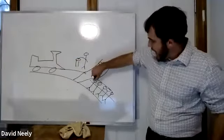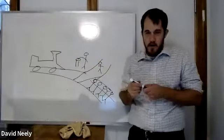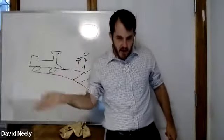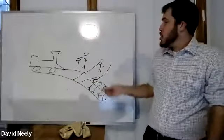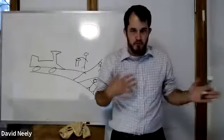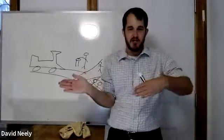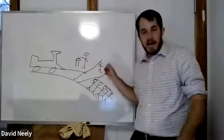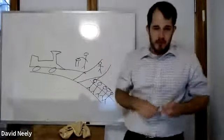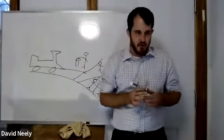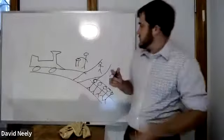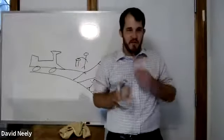If you press this button, the train changes direction and instead of running over five people, it's just going to run over one person. One person dies if you press the button; five people die if you don't. Should you press the button? Is the right thing to do to press the button? How many of you think the right thing to do is to press the button? Most of us feel like you should press the button.